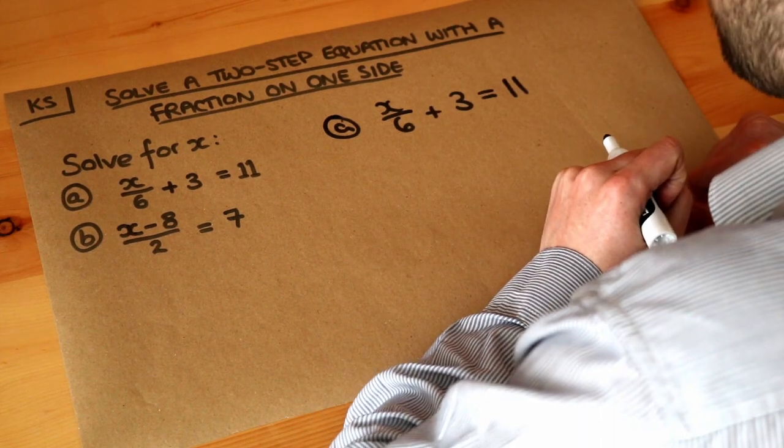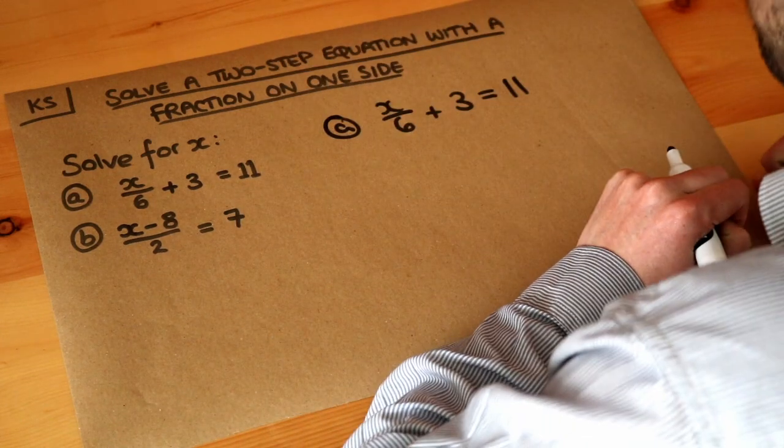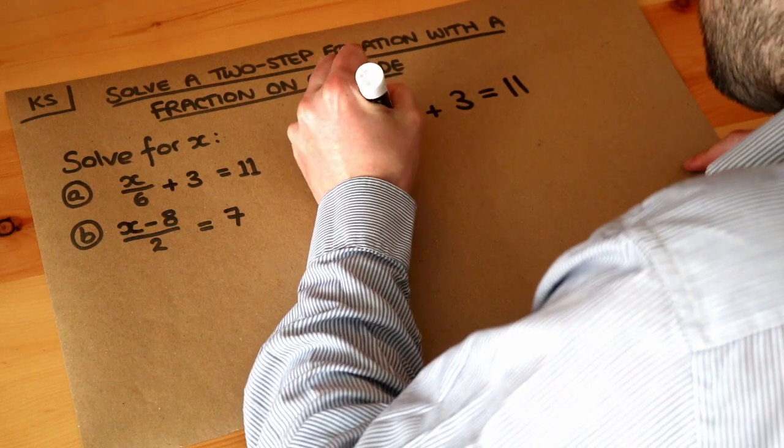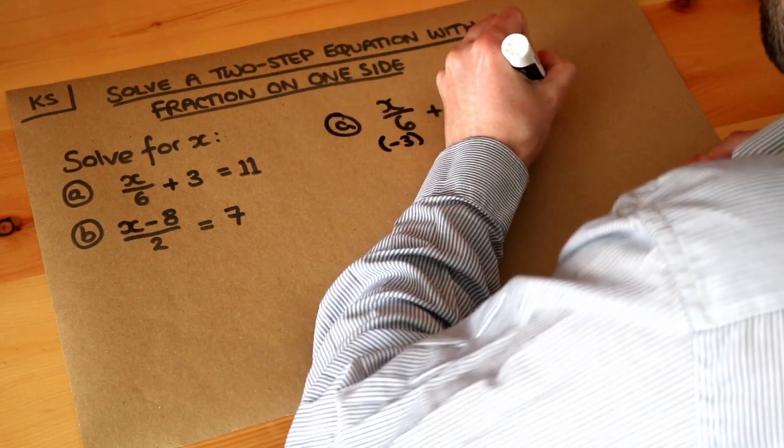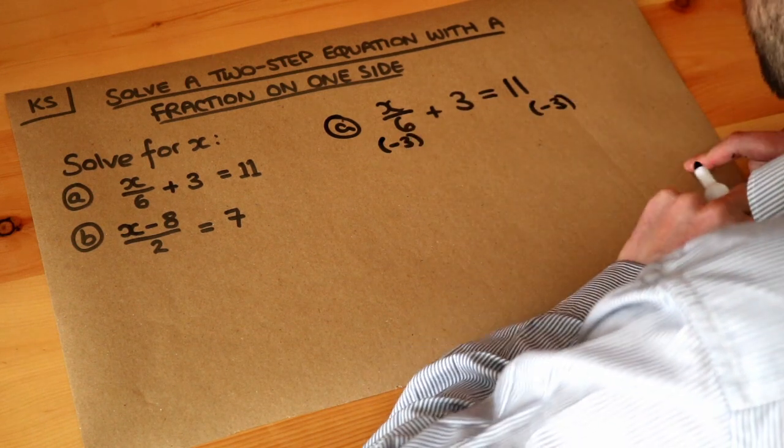What was the last thing we did to x? Well the last thing we did was adding 3 and we undo that by doing the opposite. The opposite of adding 3 is subtracting 3. So we subtract 3 from both sides of the equation. Whatever you do to the left-hand side of the equation, you've got to do the same to the right-hand side of the equation.